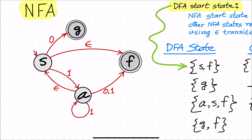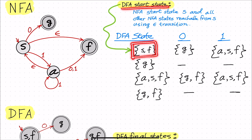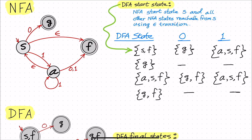We'll look at how we can convert this NFA to an equivalent DFA, and our approach would be tabular. We'll be constructing a table with three columns: the first column header is DFA state, the second is input symbol 0, and the third is input symbol 1. We don't have epsilon as a column header because epsilon is not an input symbol. In the first row, we write our DFA start state. By definition, each DFA state is a subset of NFA states. The DFA start state is the NFA start state S and all other NFA states reachable from S using epsilon transitions. Since there's an epsilon transition from S to F, our DFA start state is {S, F}.